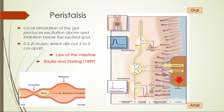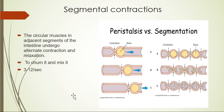So in peristalsis: contraction above, relaxation below. This contraction forces the bolus toward the anal cavity, and the relaxation allows easy passage of the bolus. Peristalsis is therefore a propulsive movement.